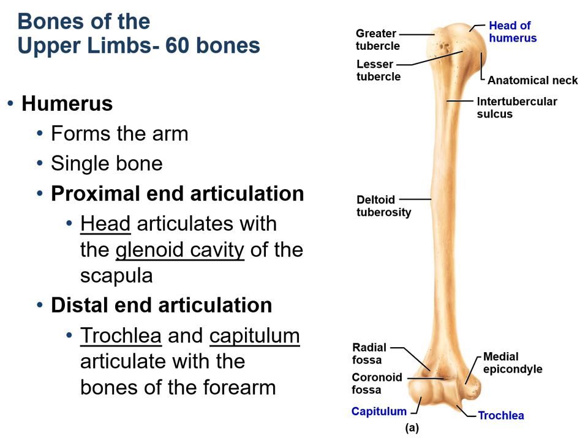The diaphysis of the humerus features a projection called the deltoid tuberosity where the deltoid muscles attach. At the distal end, the humerus has two small projections called the medial and lateral epicondyles. Distal to these are two larger condyles, the medial trochlea and the lateral capitulum. Proximal to the trochlea are indentations where the ulna articulates: the anterior coronoid fossa and the posterior olecranon fossa.